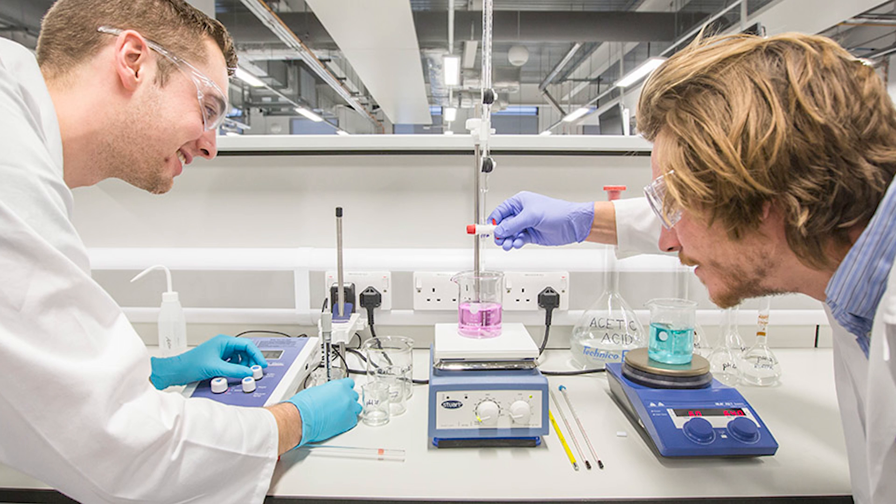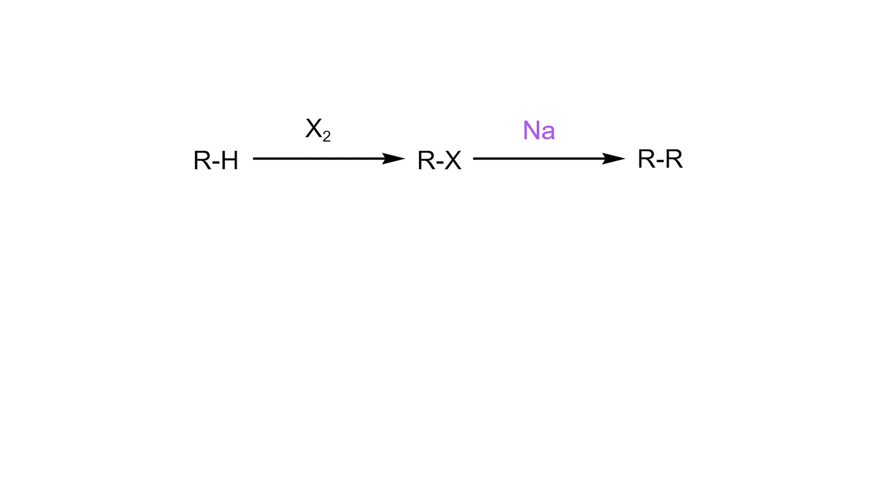This is one of the first reactions that students learn when they start organic chemistry and is actually the first organic reaction I've learned. It is used to make higher alkane homologues from halogen substituted lower homologues. For example, in this video, I will turn the 1-bromobutane into octane using sodium.